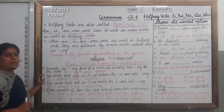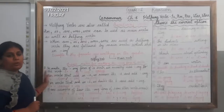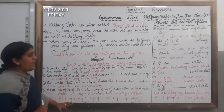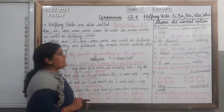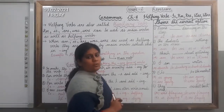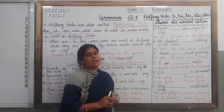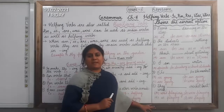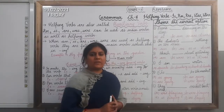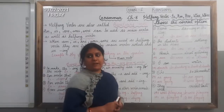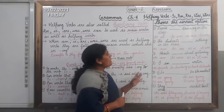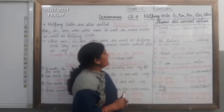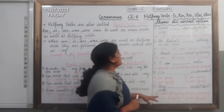So children, I hope these rules are clear to you. Understand these rules properly. Now we will do some questions related to this chapter which will be coming in your examination. The pattern will be the same but the questions will be different. The multiple choice questions are written on the board. We will understand one by one.